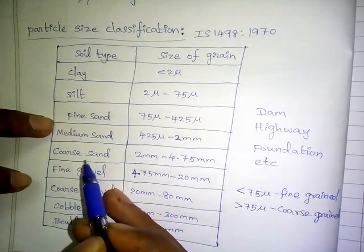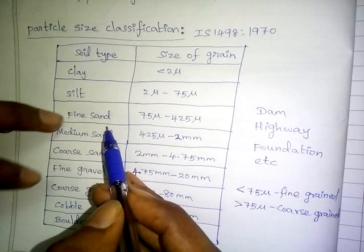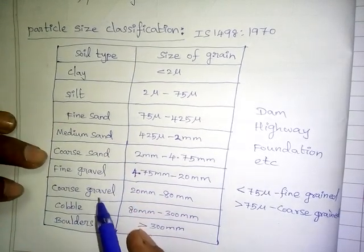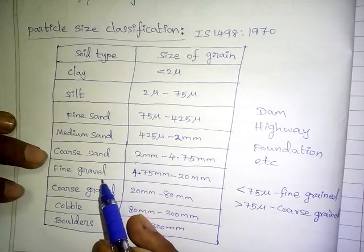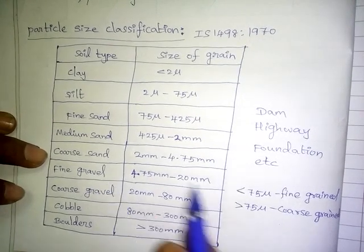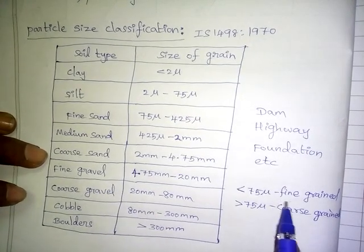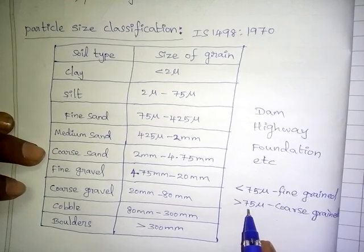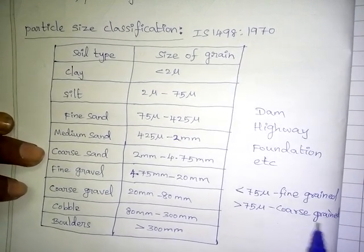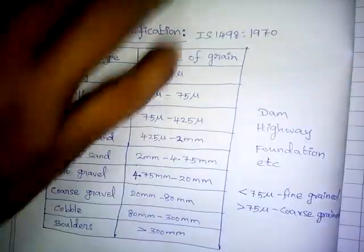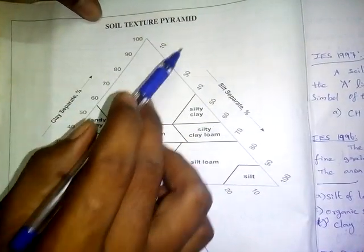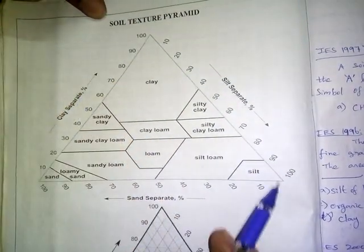In the field, sand is fine-grained and gravel is coarse-grained. The boundary between fine-grained and coarse-grained soils is 75 microns. Soils passing through the 75-micron sieve are considered fine-grained, and those retained are coarse-grained. This is the soil texture classification.